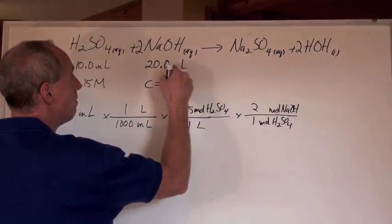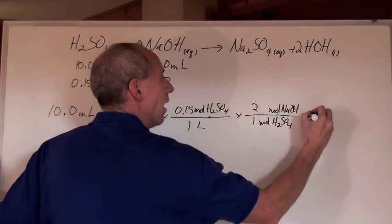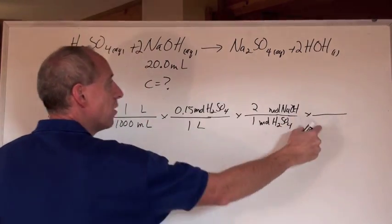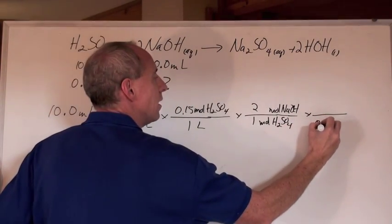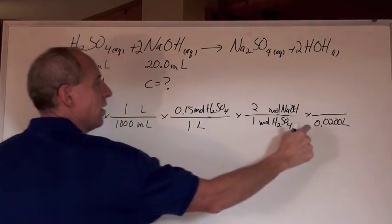So now, what don't we want? We don't want moles of that. We want concentration in moles per liter. So what are we going to put down at the bottom here? I'm just going to write it in liters, 0.020, look, I kept my number of significant digits. Three here, three here.